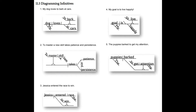Number five: 'Puppies barked to get my attention.' Barked how? Barked to get my attention. 'To get my attention' is the infinitive functioning as an adverb modifying the verb 'barked.' It needs a little extra space because of the forked line. This entire adverbial infinitive phrase 'to get my attention' is diagrammed accordingly. You'll see a similar version of that in number three.